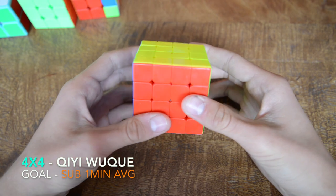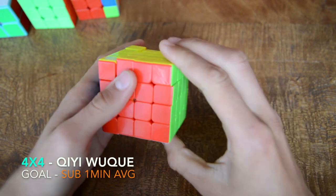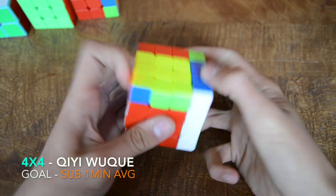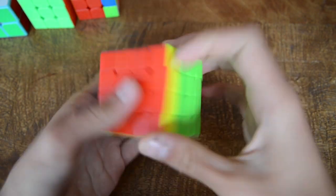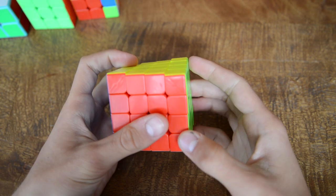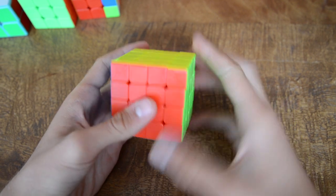Next I will be competing in 4x4 and my goal is to get a sub 1 minute average finally. I'll be using this YJ Yusu, a 4x4 Yusu. I don't know how people say it. I think it's Yusu. I mean I haven't practiced 4x4.